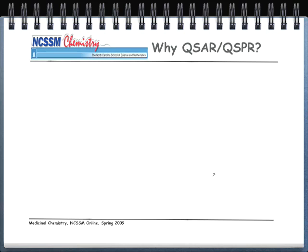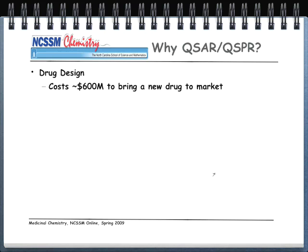Continuing on — why QSAR? Sometimes we will also call it QSPR: quantitative structure-property relationships. In drug design, it costs approximately $600 million to bring a new drug to market, and that number is probably considerably higher now since this slide is a couple years old. One of the problems in drug design is that patent life is limited to about seven years. After seven years, the company can no longer collect revenues off that drug because other companies are free to make generic versions. So it's really important that companies not waste a lot of money in drug design and development, which is why QSAR is going to help us.